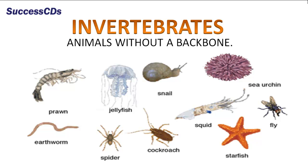All animals do not have bones. Animals can be grouped into two categories on the basis of presence of backbone. Those animals in which a backbone is not present are called invertebrates.